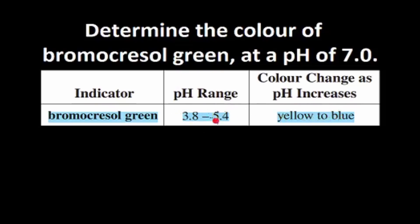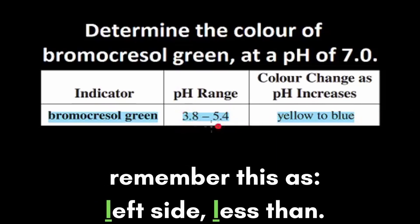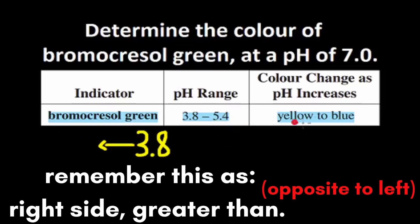Let's treat this dash and this 2 as the middle line. We'll see that 3.8 and yellow would be on the left side, and 5.4 and blue would be on the right side. Since 3.8 and yellow are both on the left side, that means all pHs less than 3.8 will be yellow. 5.4 and blue are both on the right side, so all pHs greater than 5.4 will be blue.